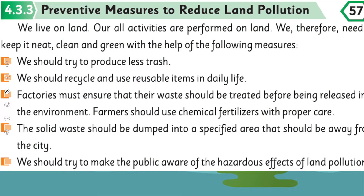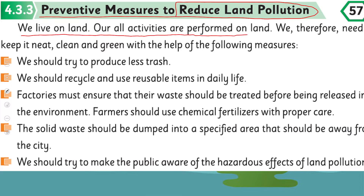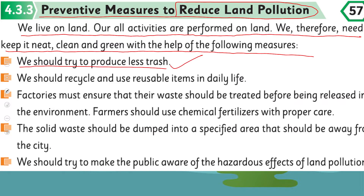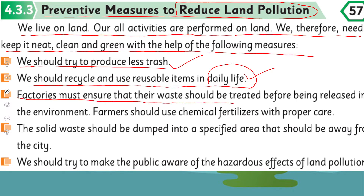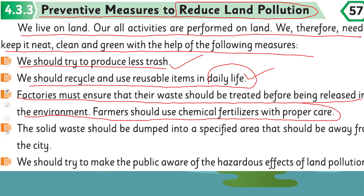Let's talk about preventive measures — kis tarikay se land pollution ko control kiya ja sakta hai. We live on land and all our activities are performed on land, so we need to keep it neat, clean, and green. We should try to produce less trash. We should recycle and use reusable materials. Factories must ensure that waste is treated before being released into the environment.